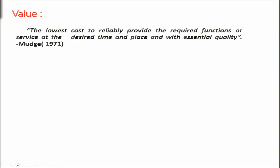What is value? The definition given by Mudge — there is a famous book on value engineering by Mudge, you can follow that — value is the lowest cost to reliably provide the required functions or service at the desired time and place with essential quality. There are three constituents: required functions is number one; desired time and place is number two; and essential quality is number three. So there are three components in the definition of value.